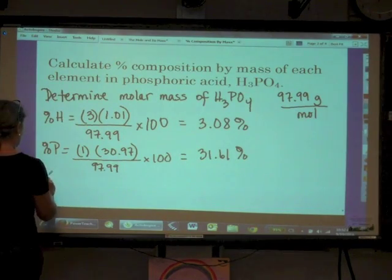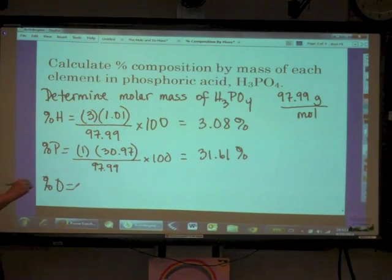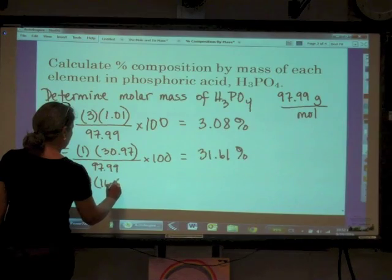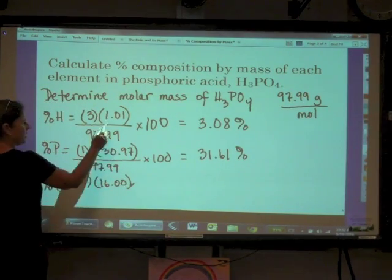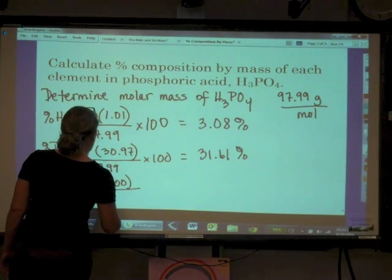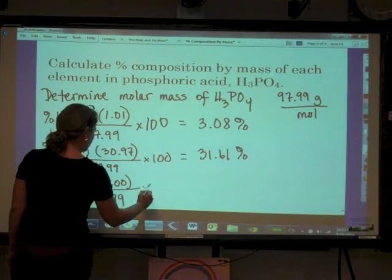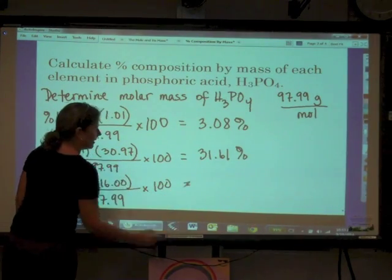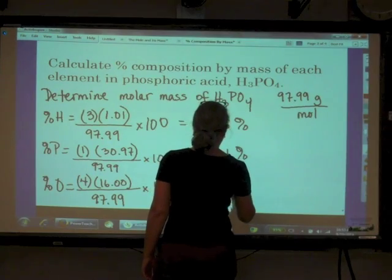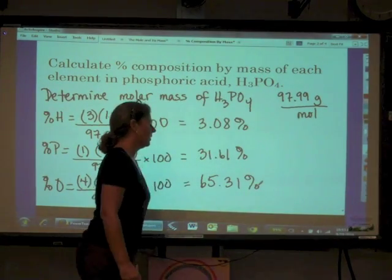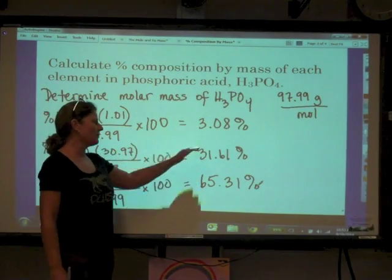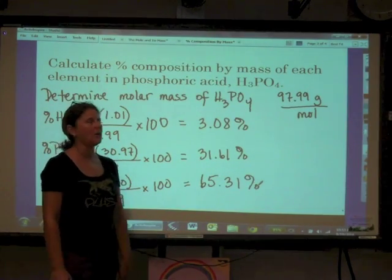Last but not least, let's do the oxygen. Percent oxygen. How many oxygens do we have? We've got four. And each oxygen weighs in at 16. Where am I getting these numbers? Getting them off the periodic table. Divided by 97.99, multiply it by 100. And that tells me that oxygen is contributing 65.31% of the overall mass of this compound. If we've done things correctly, these three numbers should add up to 100. That's right.